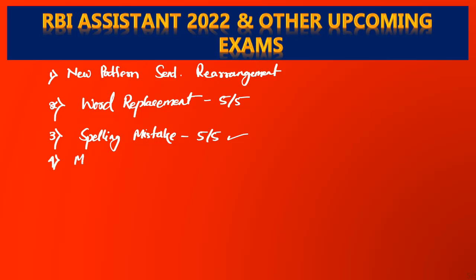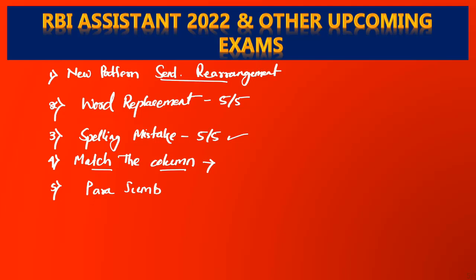Another is match the column. This topic is also one of the doable topics in the English section — you just have to match one statement from one column with another statement from the second column. Connecting sentences is as equal to sentence rearrangement, which is very easy. And if you have parajumble, do try to solve it as this can give you five out of five, if you can just rearrange the five or six sentences given, and then answer which sentence will be second or third.